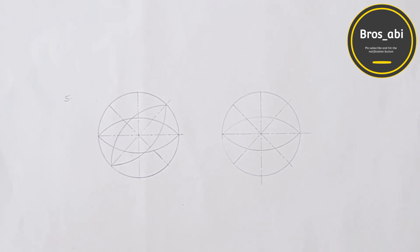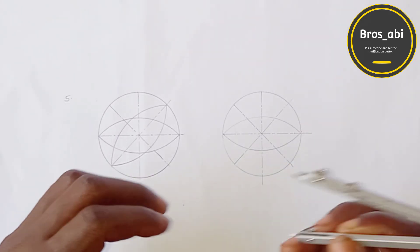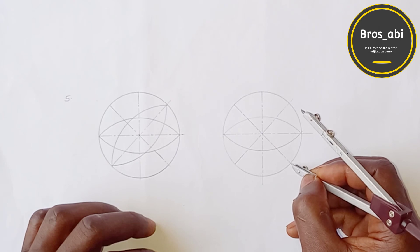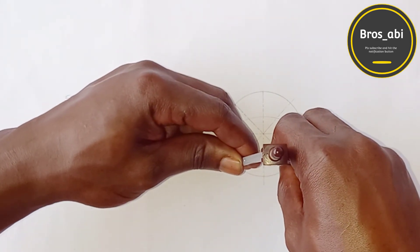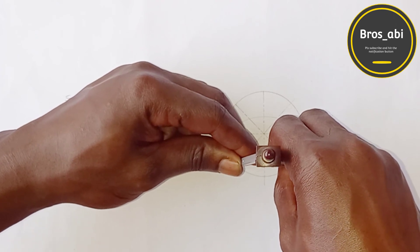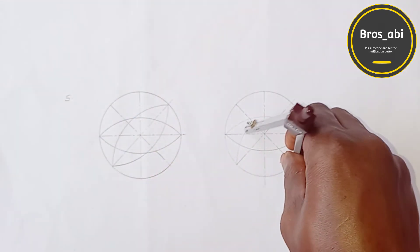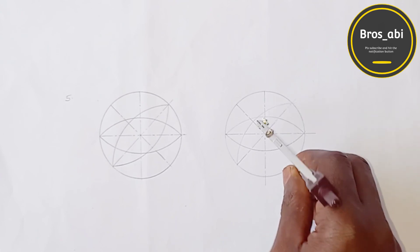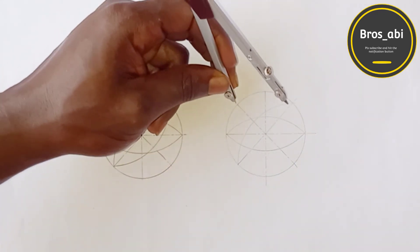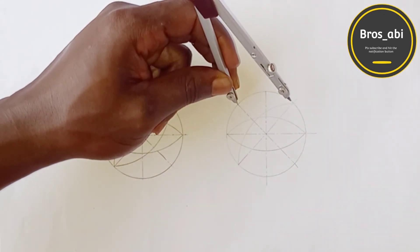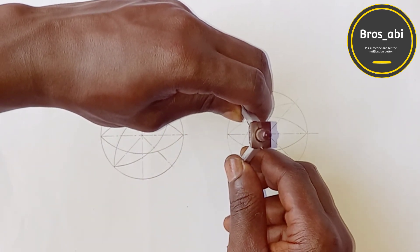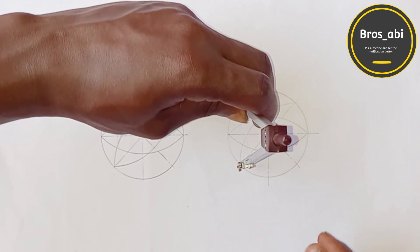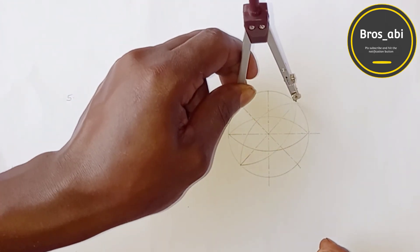So now put it at this point. To draw this, take it to this part of it. Good. Then take it to the top at the point here. Good. And this is it.